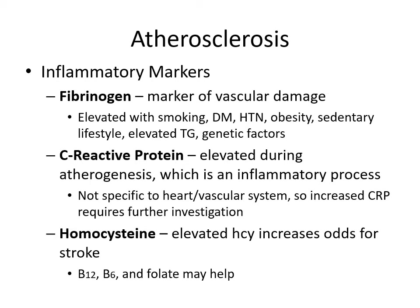Now looking at inflammatory markers: fibrinogen is a marker of vascular damage, elevated with smoking, diabetes, hypertension, obesity, sedentary lifestyle, elevated triglycerides, and genetic factors. C-reactive protein is elevated during atherogenesis, which is an inflammatory process. Although CRP is not specific to the heart and vascular system, increased CRP requires further investigation as there could be another cause for the inflammation. Homocysteine: elevated homocysteine increases the odds for a stroke, and B12, B6, and folate may help lower levels of homocysteine.